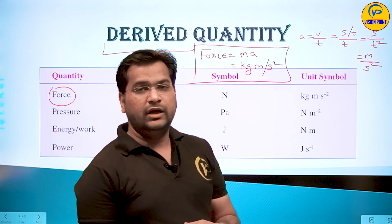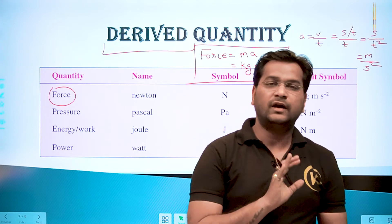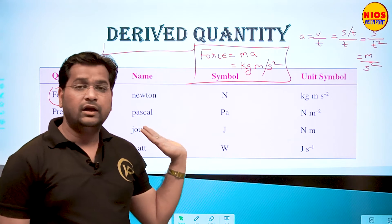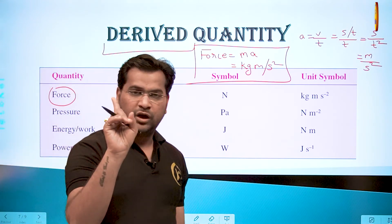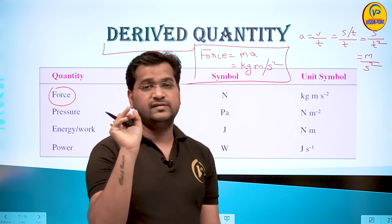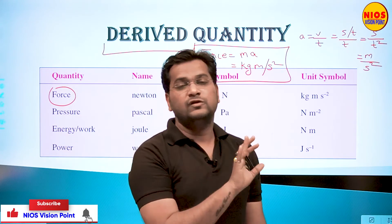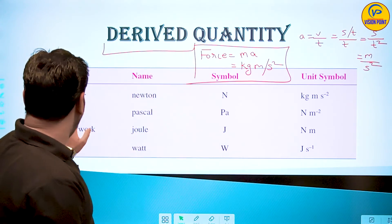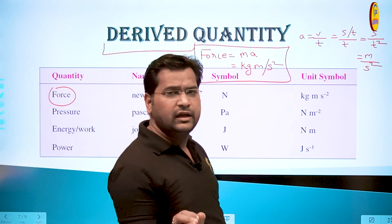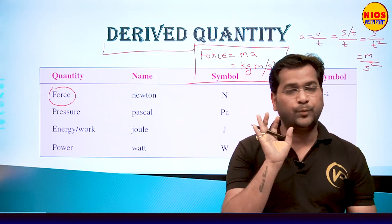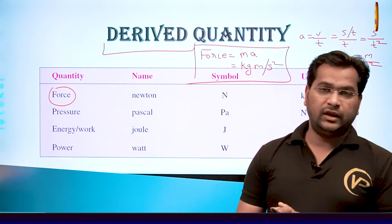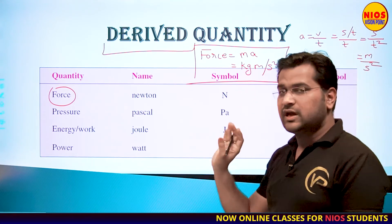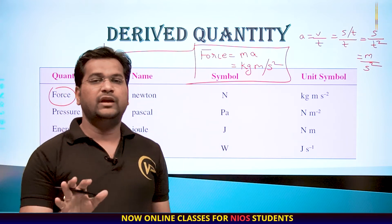वो quantities जिनकी units को हम fundamental quantities से derive करते हैं वो derived कहलाती हैं। The seven fundamental plus two supplementary = total 9. उन 9 के अलावा physics में जिंदगी भर जो भी unit पढ़ोगे — force, pressure, energy, work, power — वो सारी derived quantities हैं। आप उनकी unit निकाल कर देखना, last में सारी fundamentally मिलेंगी।